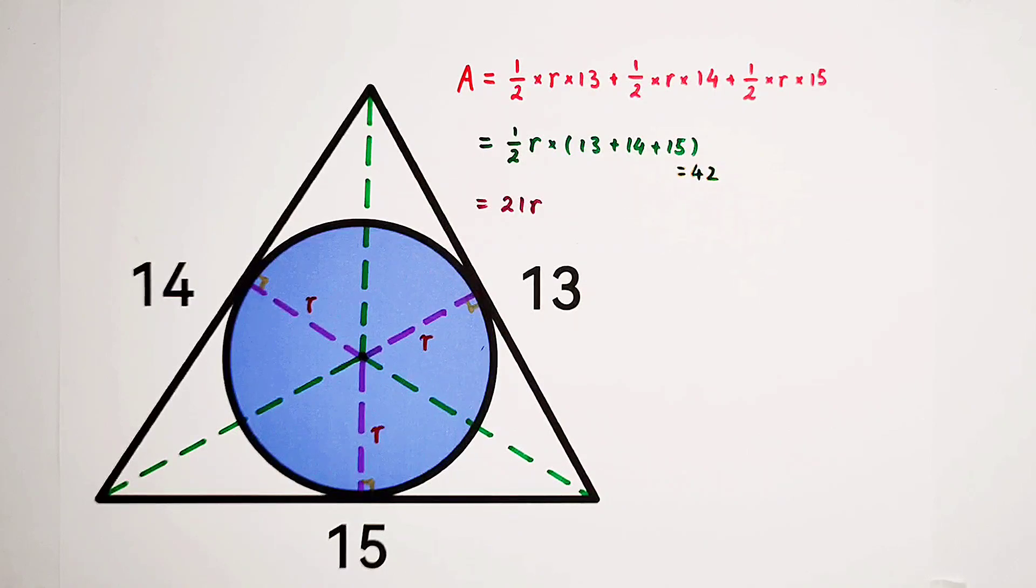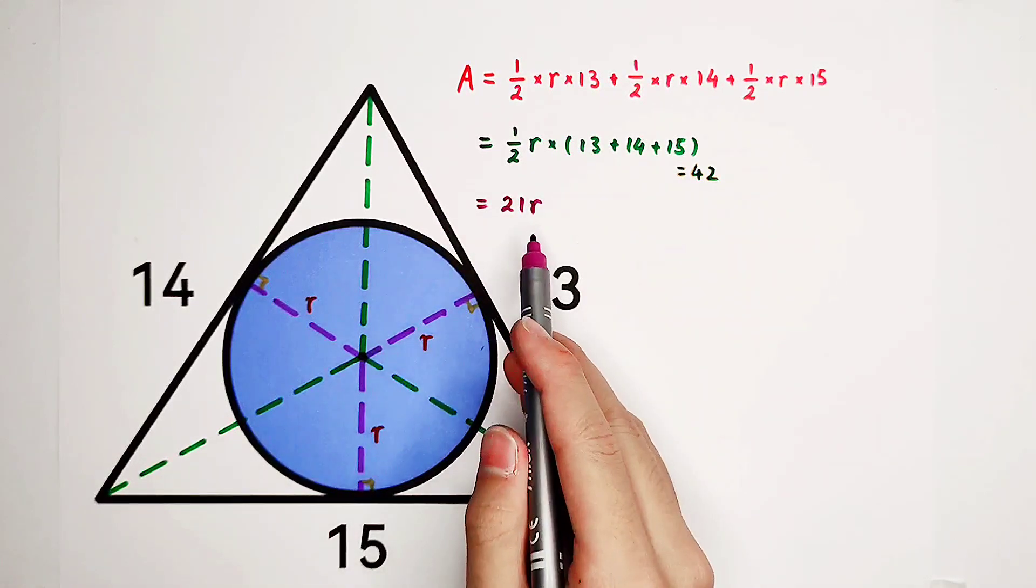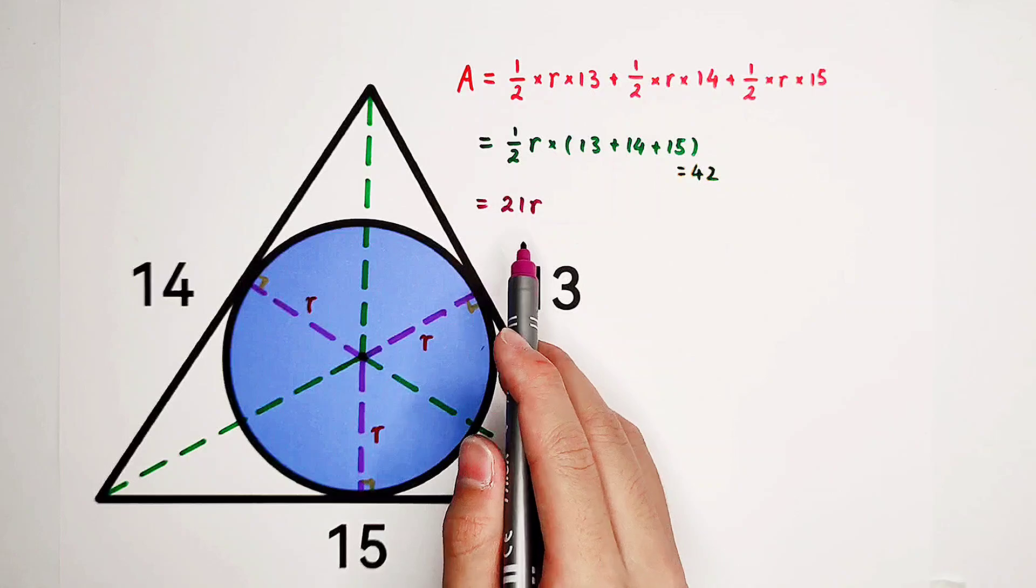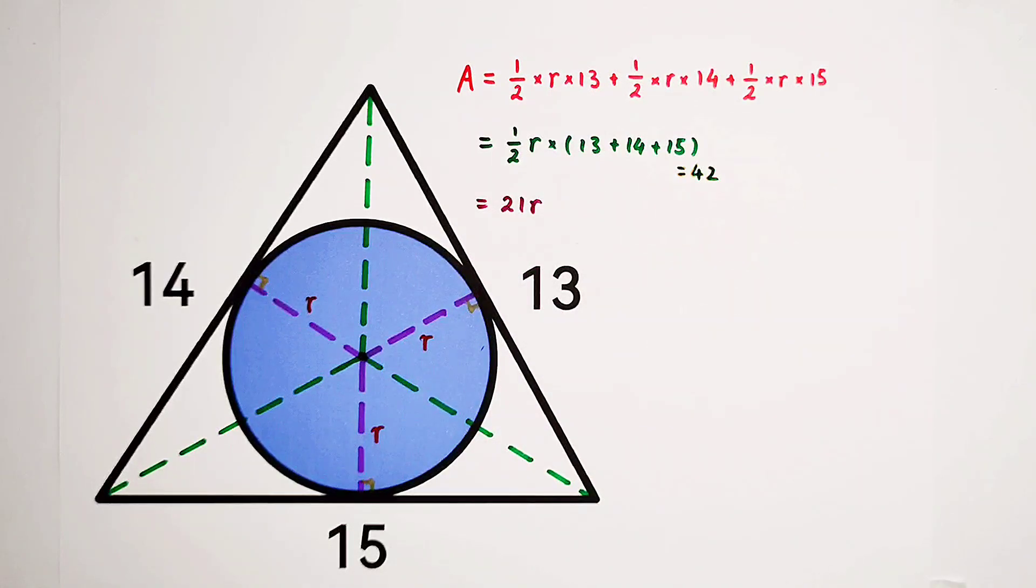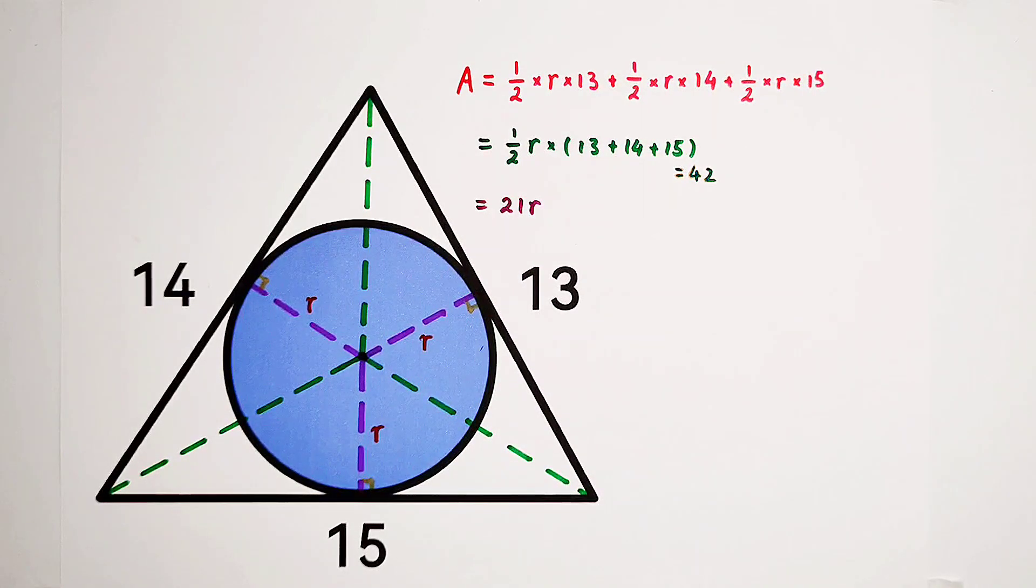But we wanna evaluate R. How should I work out R? That's the problem. Now please try to express the area of the big triangle in another way. In this way, the Heron's formula. Have you ever heard about it?